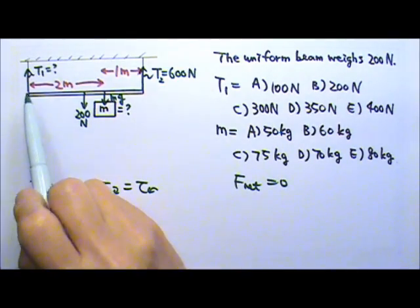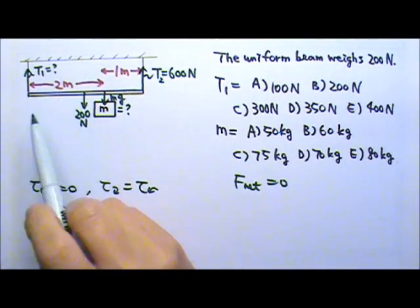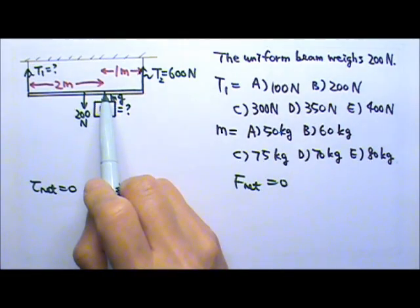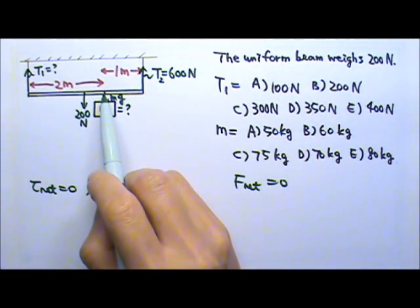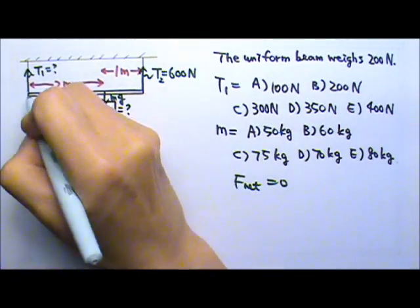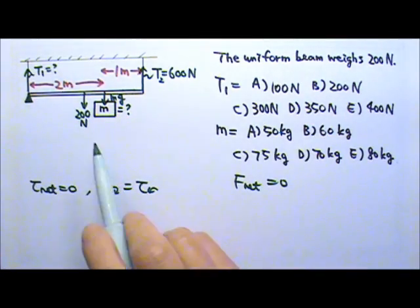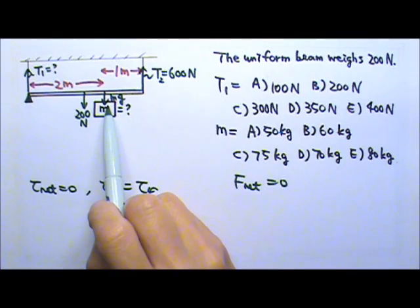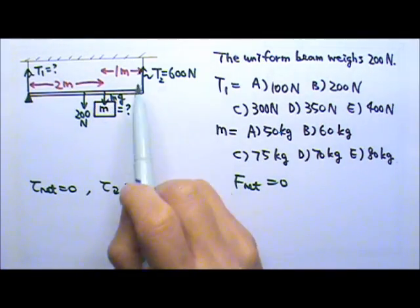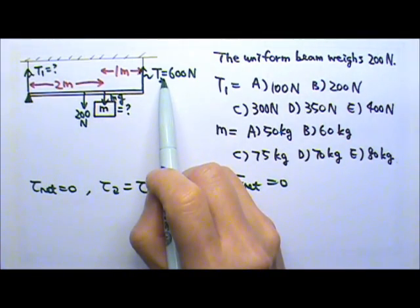There are two unknown forces, T1 and Mg. So either location can be convenient as our pretend fulcrum. I'm just going to use the T1 over here. So this is my fulcrum. That means these two forces will give me the clockwise torque. That one will give me the counterclockwise torque.